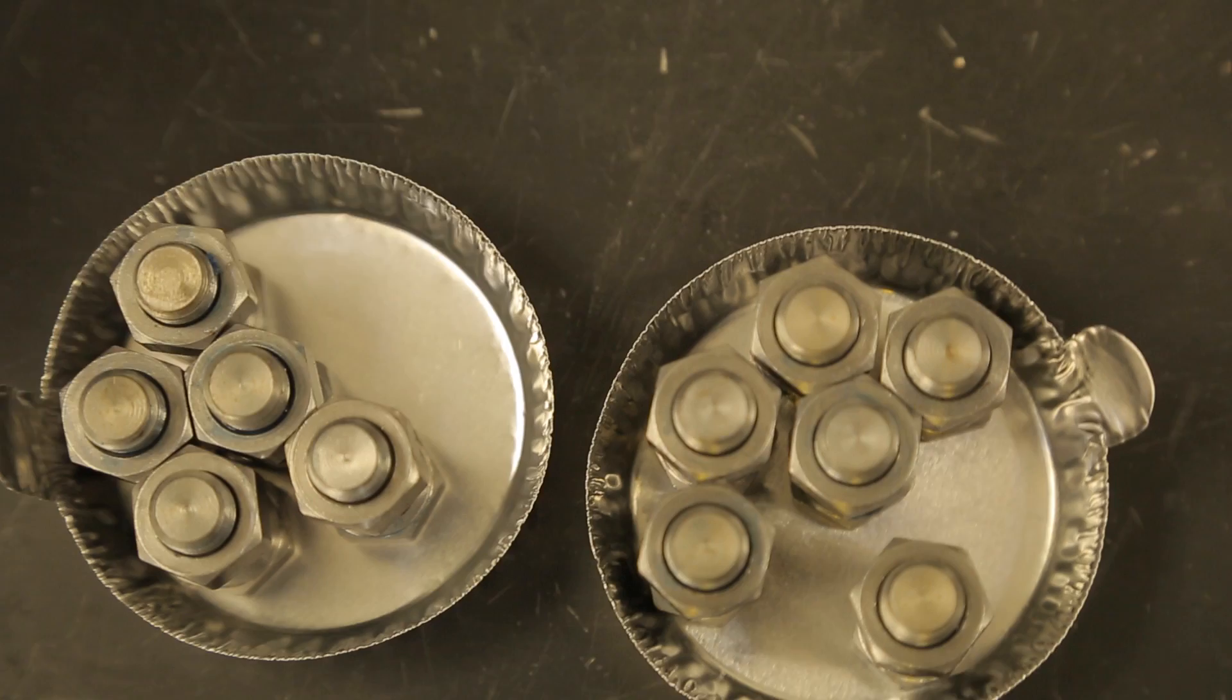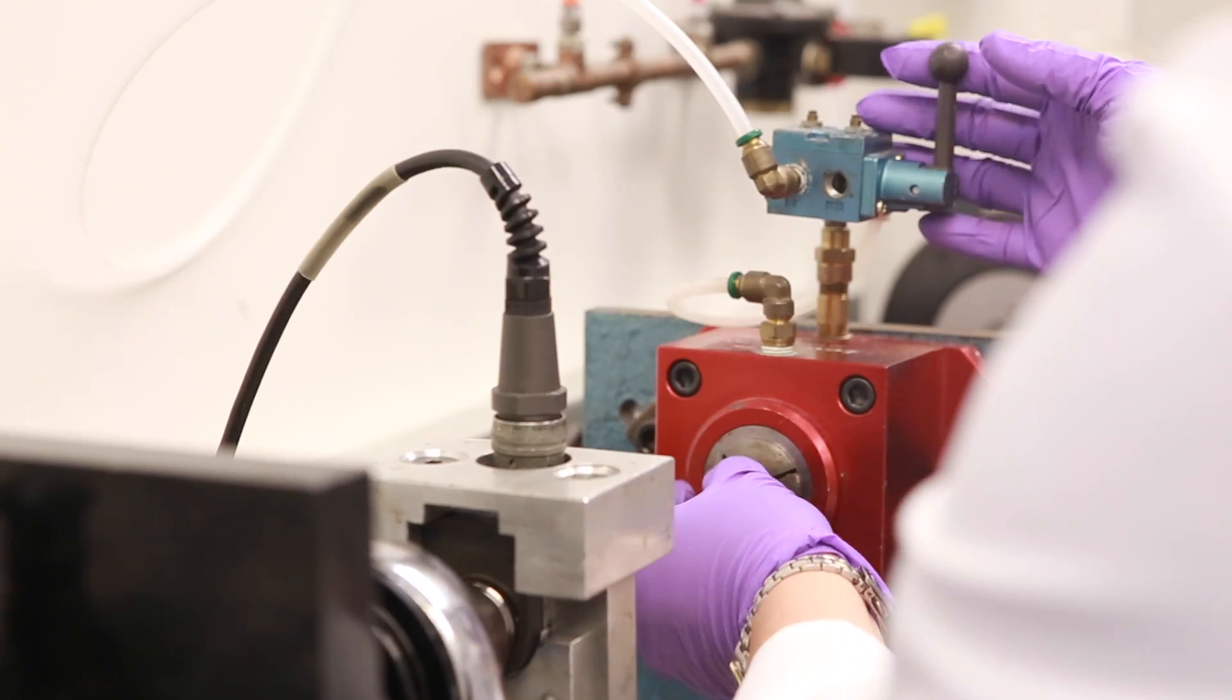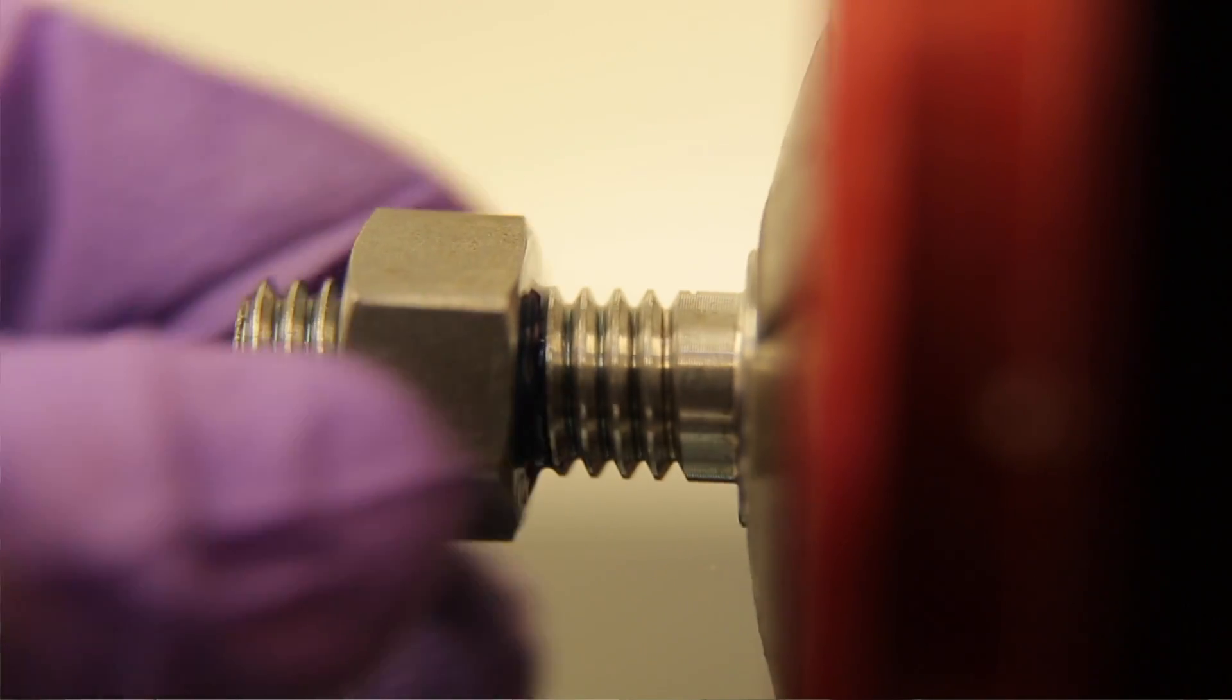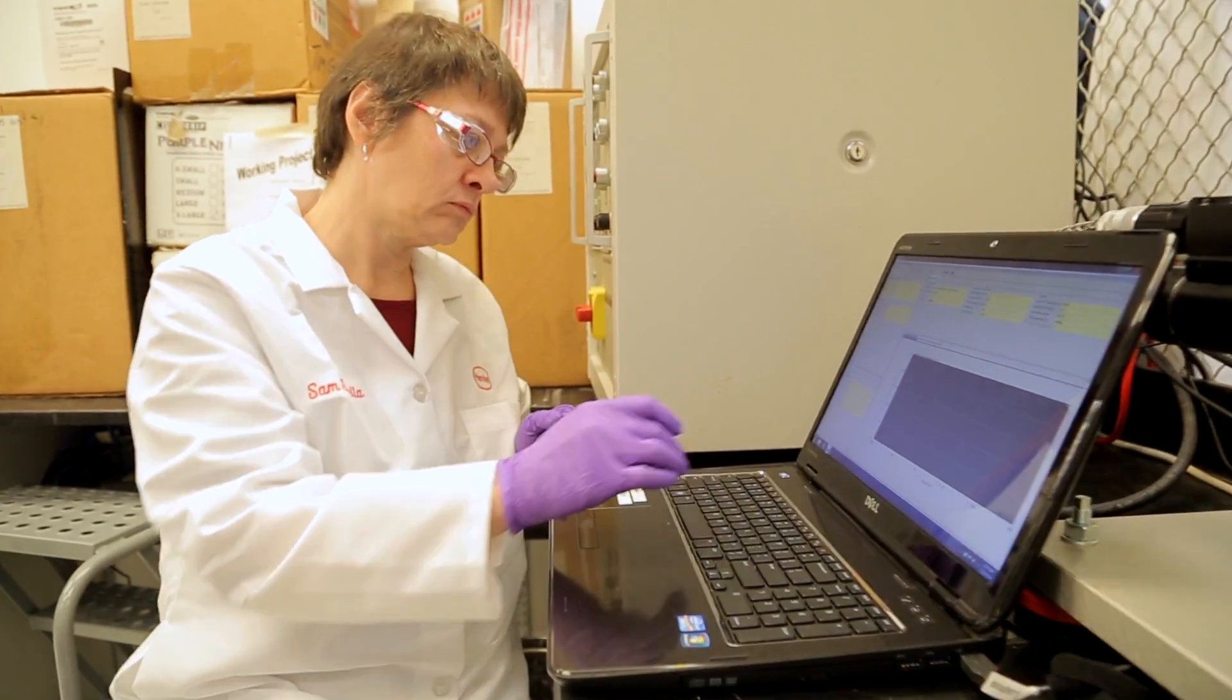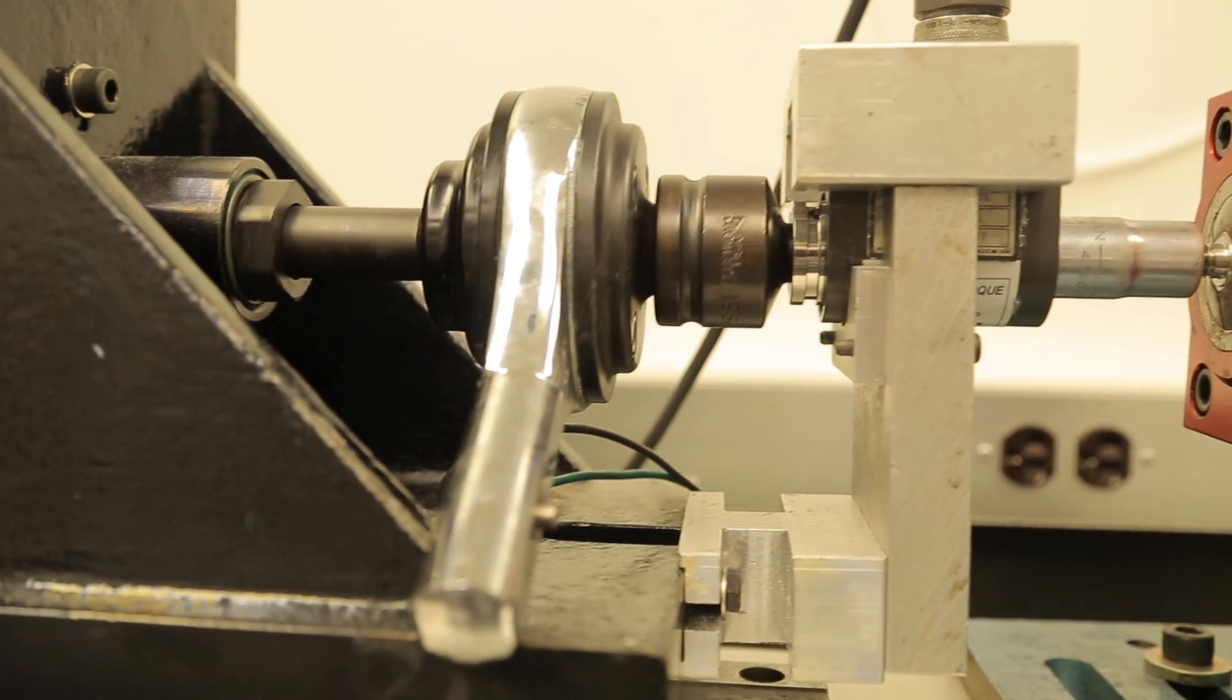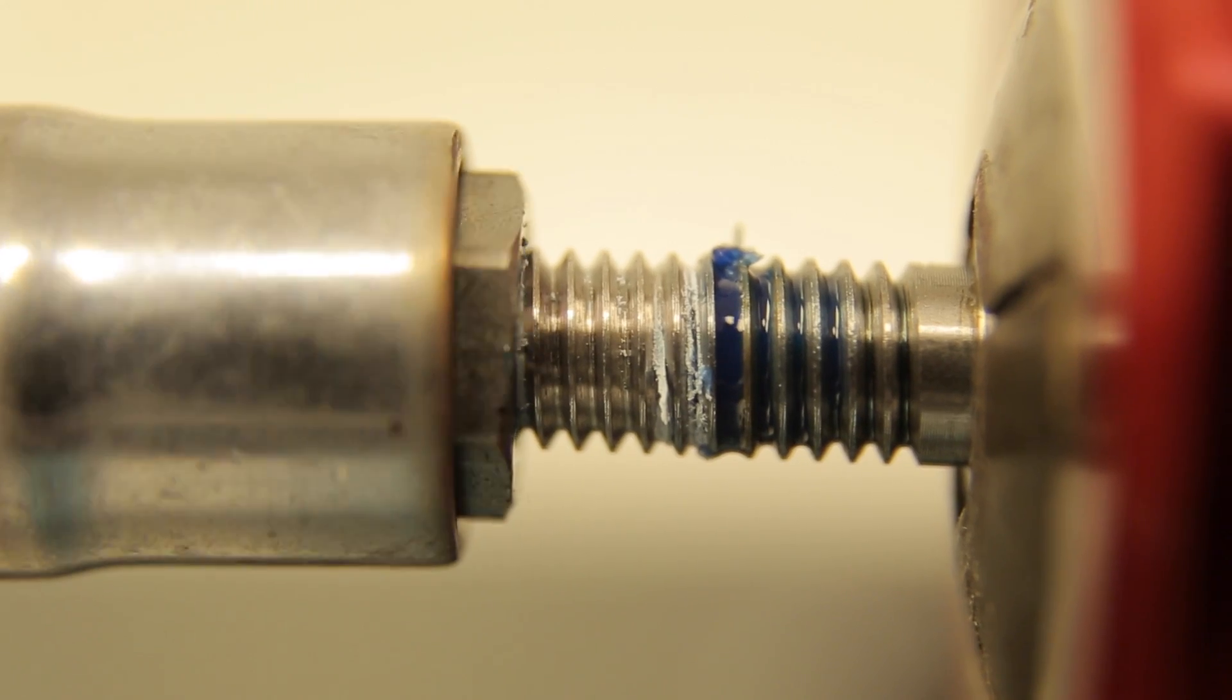One way we test these adhesives is by using straight threaded fasteners like nuts and bolts. A bonded assembly is seated in the torque tester and tested at a defined rotational speed. The initial result recorded is the strength of the first break in the cured adhesive. This is the breakaway value.